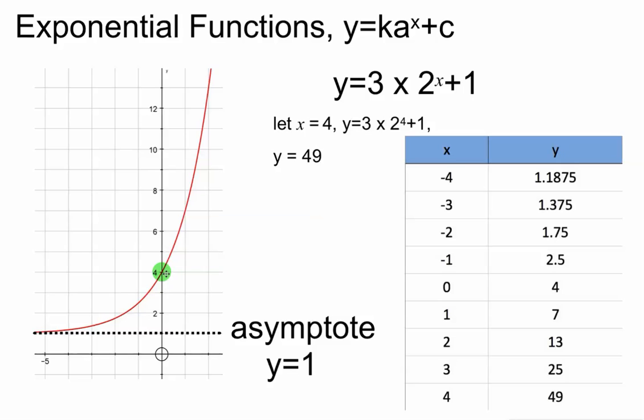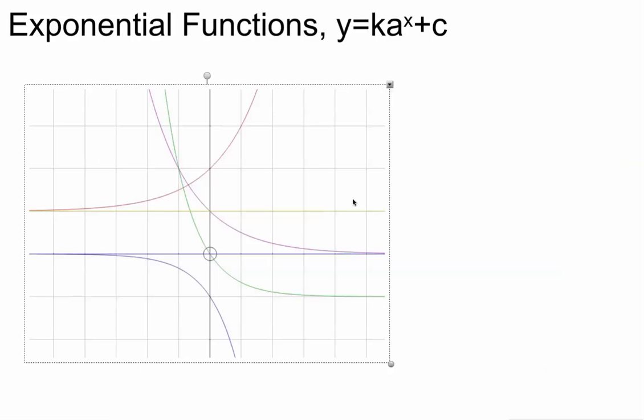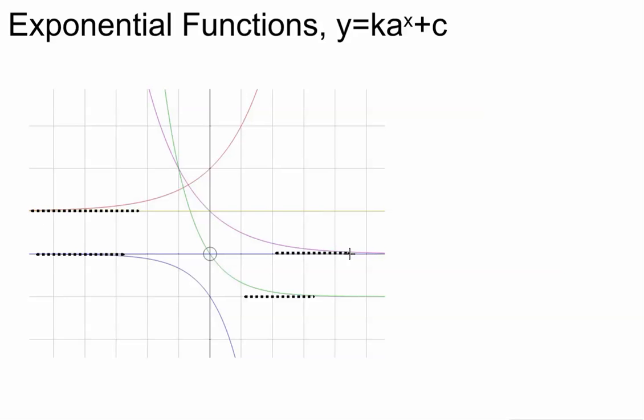We've got our key points: the y-intercept at 0, 4, and the asymptote at y equals 1. Now a quick look at some other exponential functions to give you a range of shapes and sizes they come in. Depending on the values of k, a, x, and c, they all have this limiting value that happens at different stages.